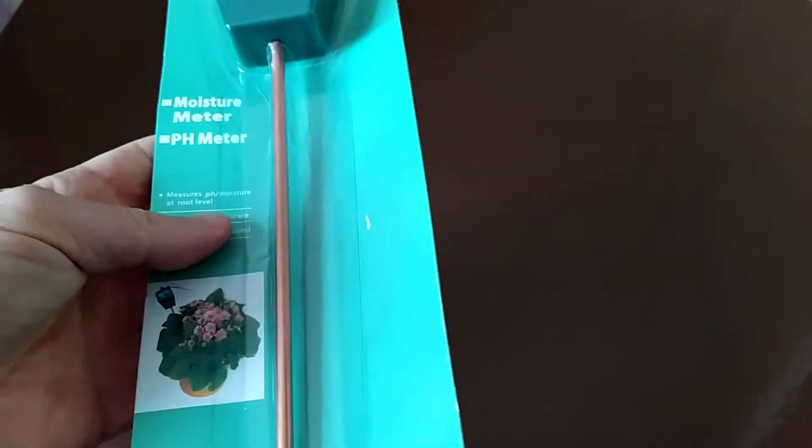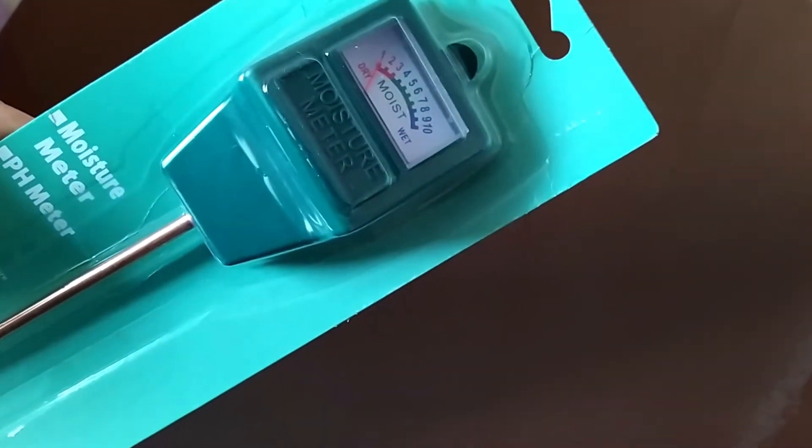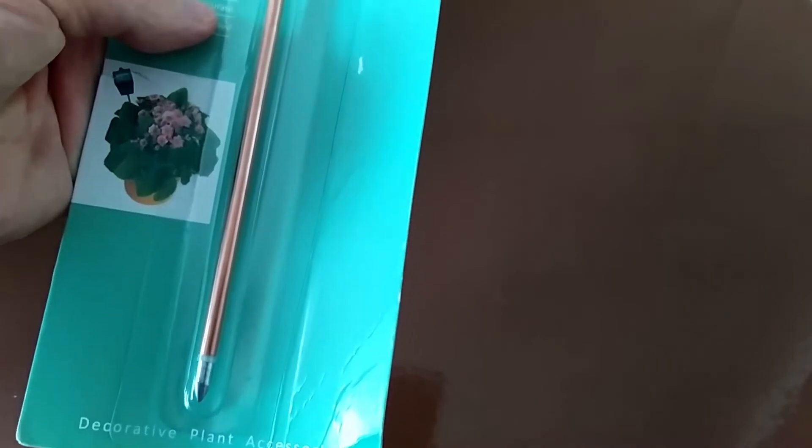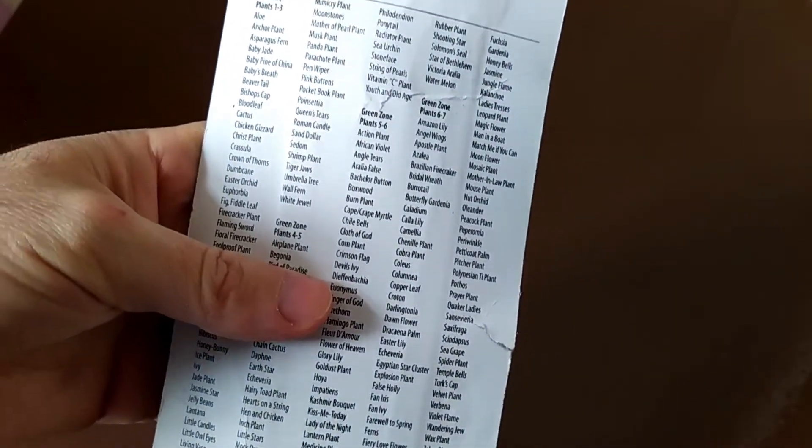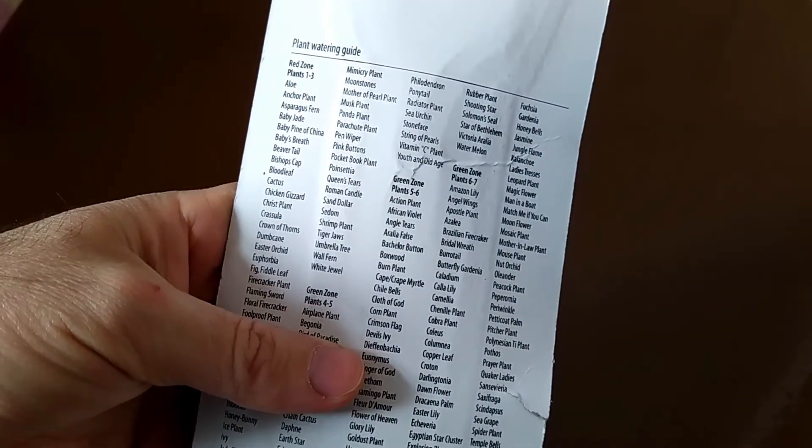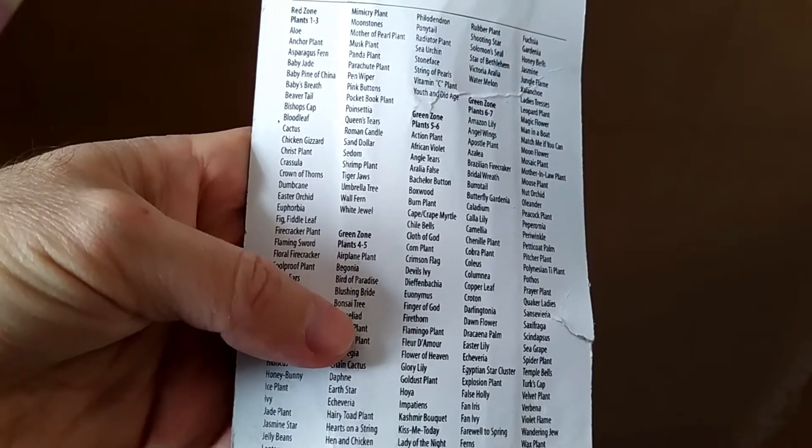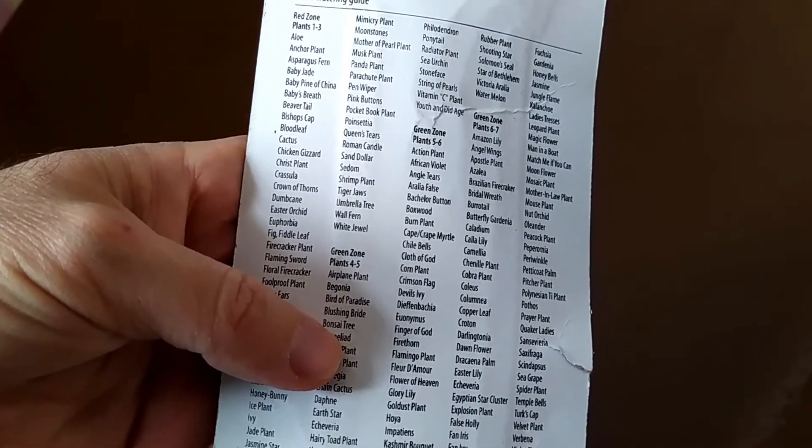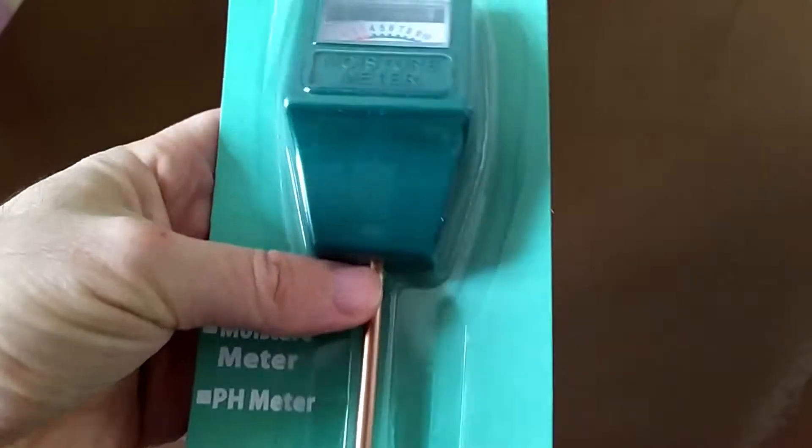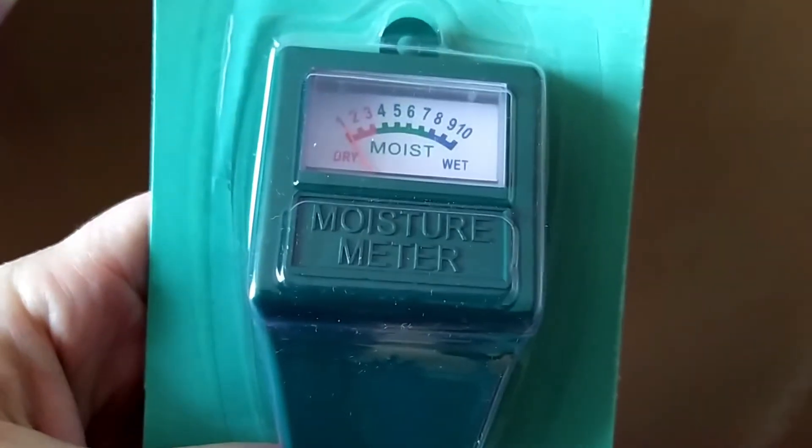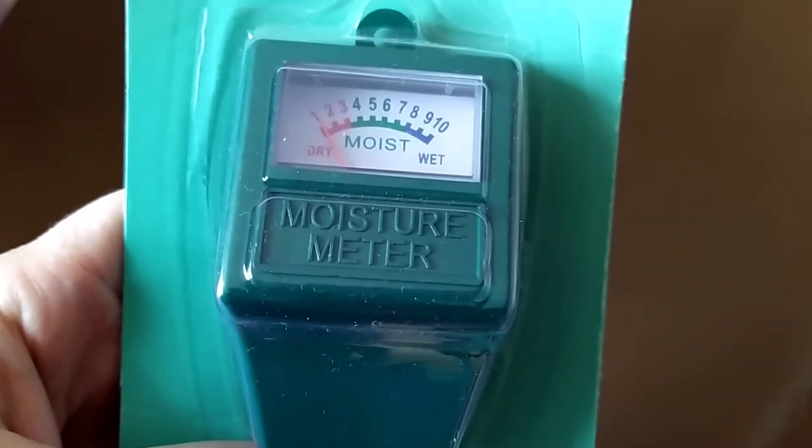This is the moisture meter. It has recommendations for plant watering, which plant to water when, and it's written with all kinds of plant names and the zones we should follow. You see here the zones like red, green, blue zones which we should follow for the watering.